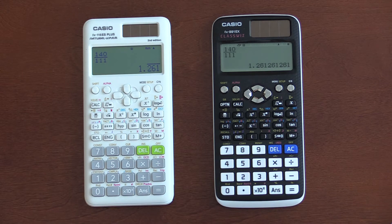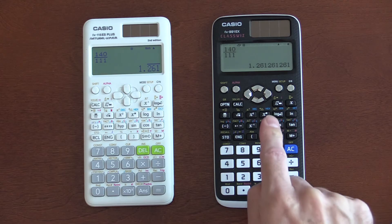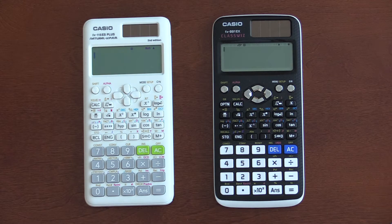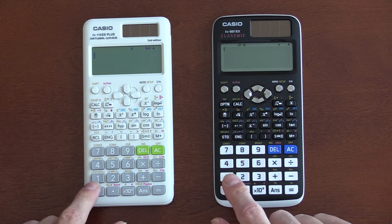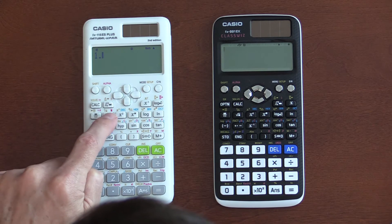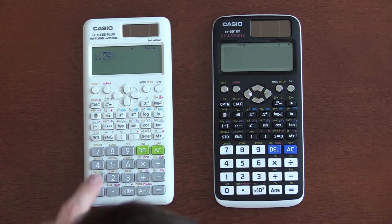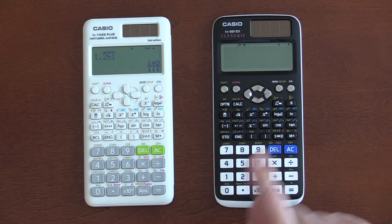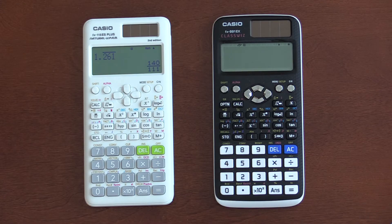you get this neat repeating symbol, and on the EX, you do not have that. And it works the other way around. If you put in the one point, and then I have to do the repeating symbol, 2, 6, 1, and hit equal, it'll convert it into a fraction. The EX does not have that feature.